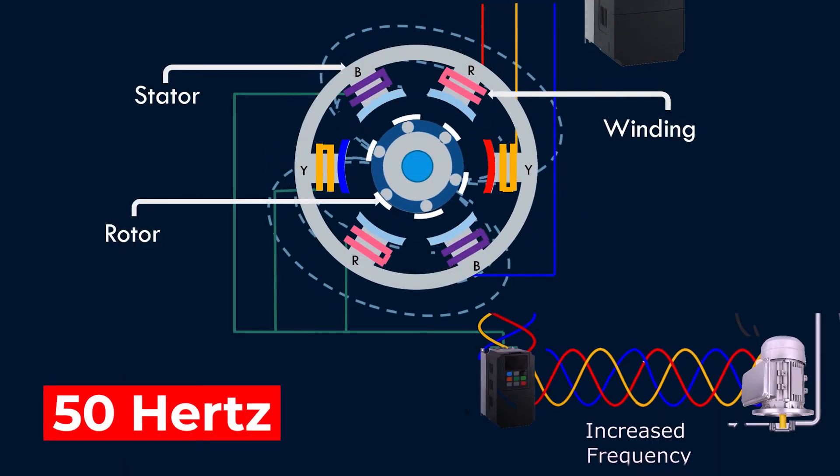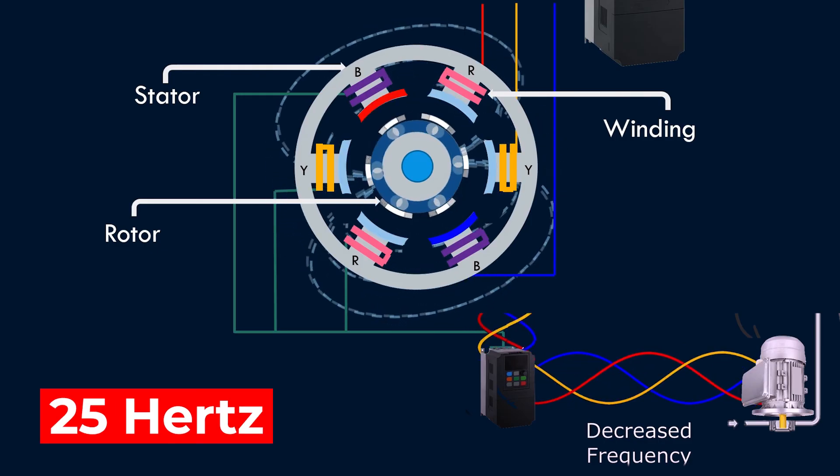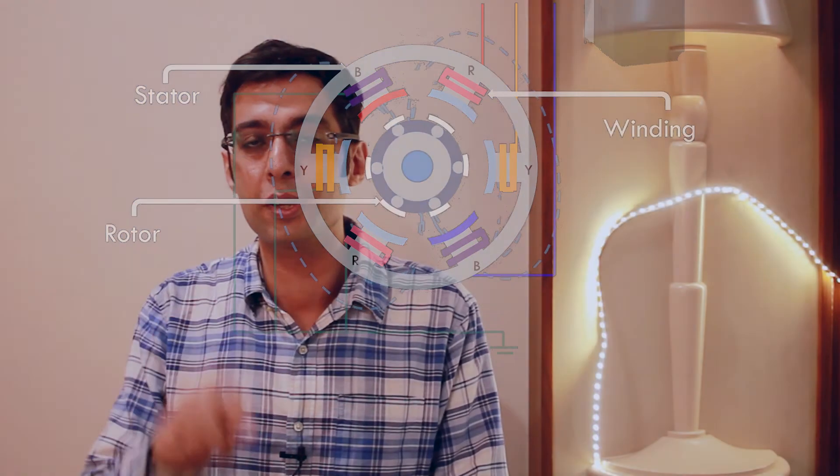If we take a three-phase power supply and apply it to a three-phase AC induction motor, that motor rotates at a frequency of 50 hertz. If we change the frequency from 50 hertz to 25 hertz — meaning we only pass 25 cycles of 0 to 220 back to minus 220 and back to 0 — the AC motor will rotate at half its speed. That is why frequency is important.